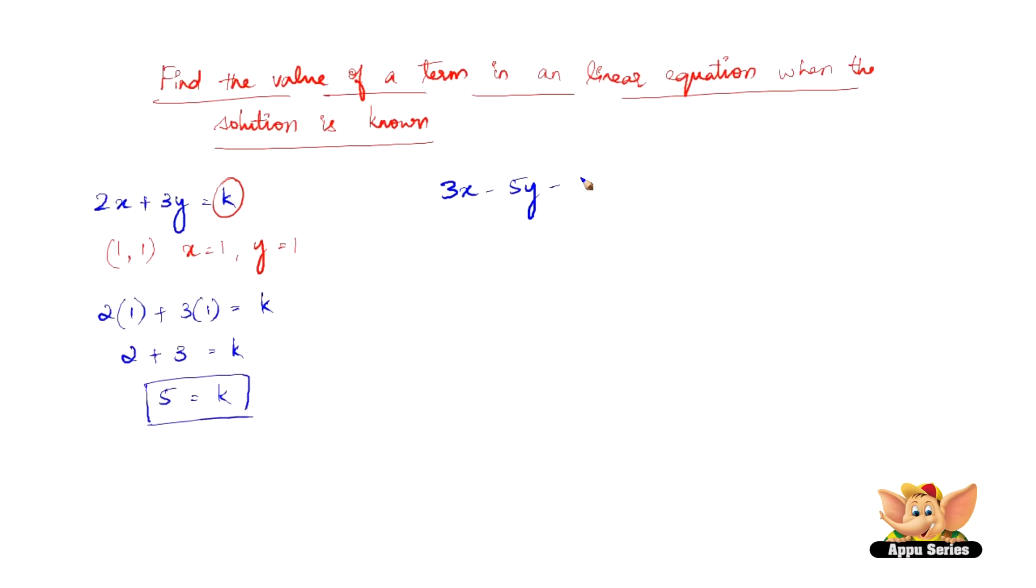So let's have 3x minus 5y minus 7 equals 0. So here, why is this? I mean, where is the term missing is what you may ask.